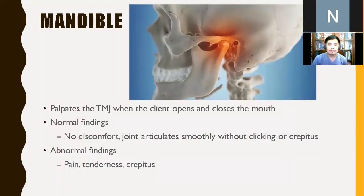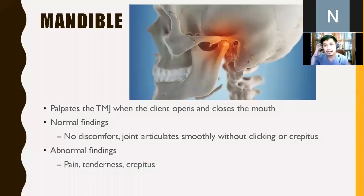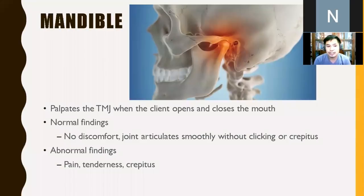Palpate the TMJ — the temporomandibular joint — which is located in front of your tragus. You open and close the mouth and feel the joint between the mandible and the temporal area. Normal finding: smooth movement with no clicking, crepitus, or pain.